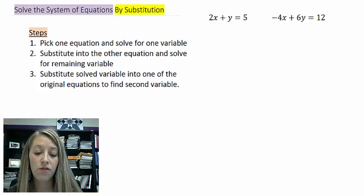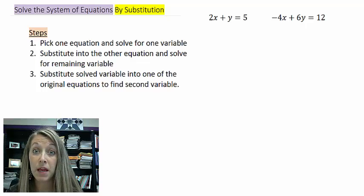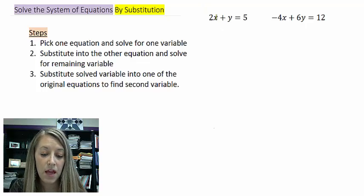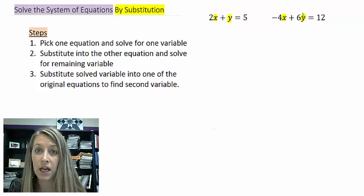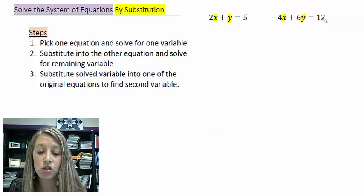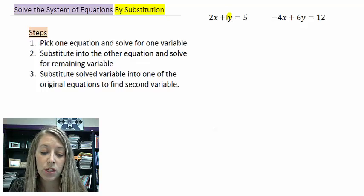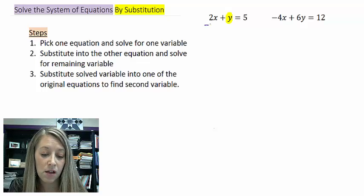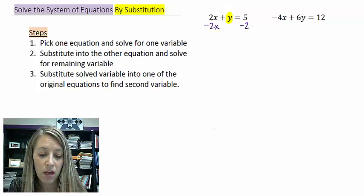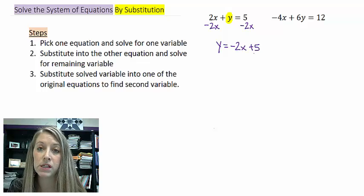So when I go to solve for one of these variables, I can pick any one. I could pick the x in my first one, or the y in my first one, or the x in the second one, or the y in the second one. My suggestion to you is just pick the one that's going to be the easiest to solve for. And that's going to be this one because I don't have any other coefficients for it. We actually already did this in the last slide. We solve for it by subtracting 2x from both sides. So I get y is equal to negative 2x plus 5.